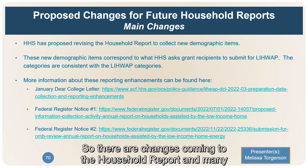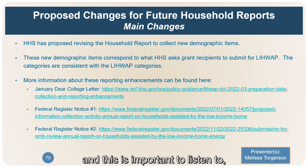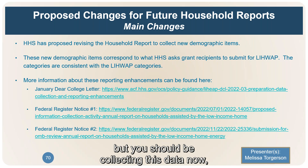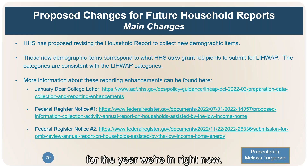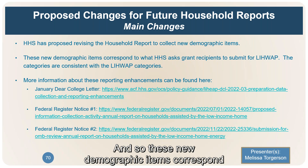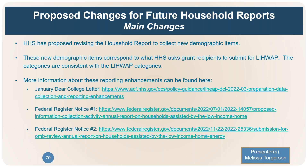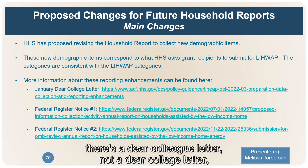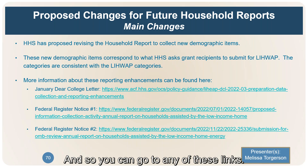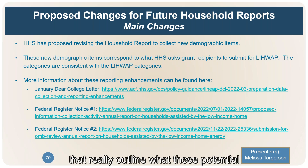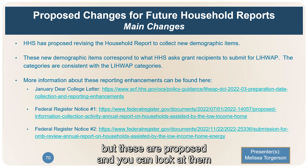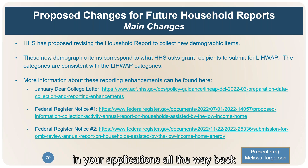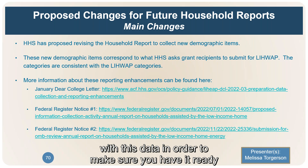Changes are coming to the household report — not for this submission, but you should be collecting this data now because it will be necessary to report next December for the year we're currently in. These new demographic items correspond to what HHS is asking you to submit. There's a Dear Colleague letter, and two Federal Register notices that outline what the potential demographic items are. They're still in the approval process, but you can review them and begin preparing your systems and client applications to make sure you have the data ready for next year's report.